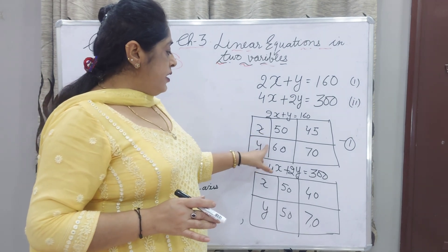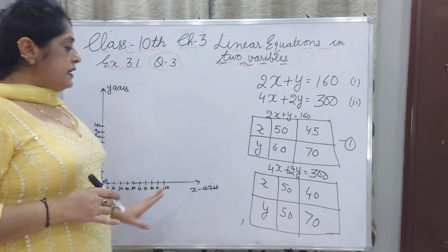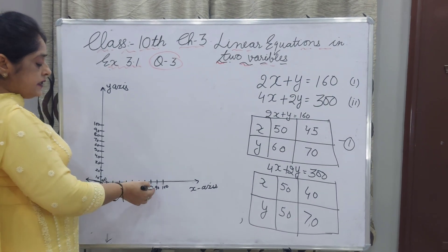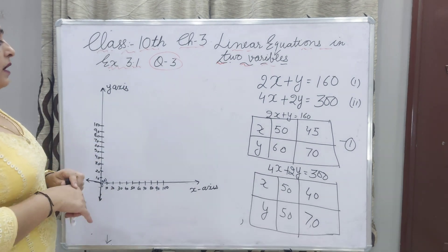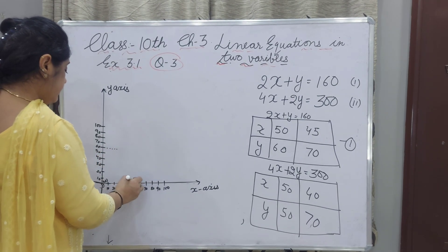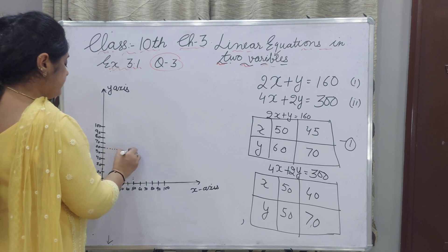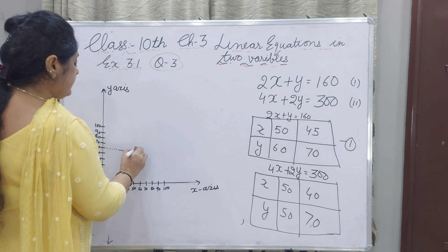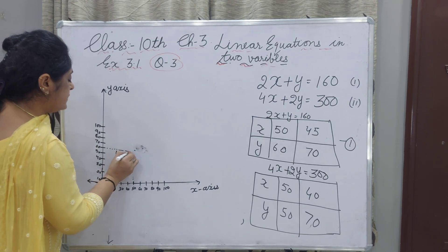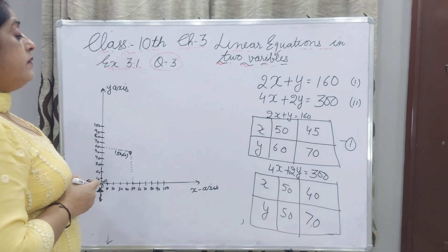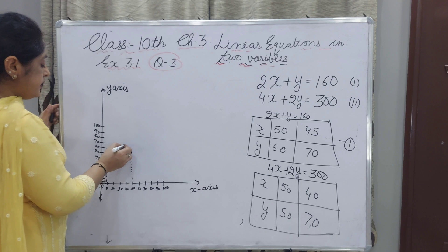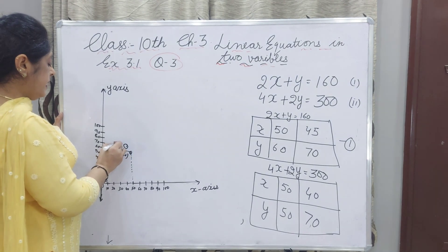First, we will draw the X axis and Y axis and plot these points. Mark intervals of 10 on both axes. For equation 1, X is 50 and Y is 60 — plot that point. Then X is 45 and Y is 70 — plot that point at (45, 70).